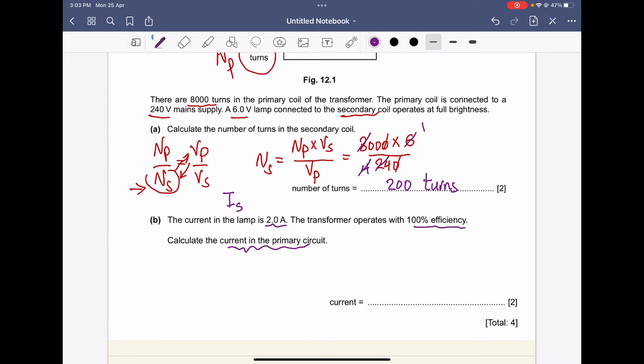There is a formula: the power input equals the power output. So the power input is Ip, the current in the primary coil, times the voltage in the primary coil. It equals Is, the current in the secondary coil, times Vs, the voltage across the secondary coil.